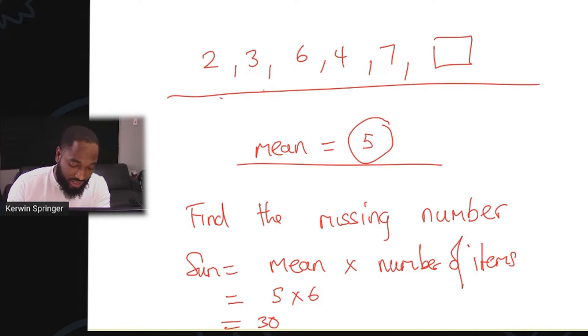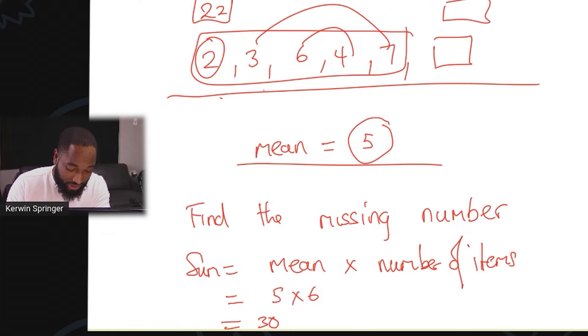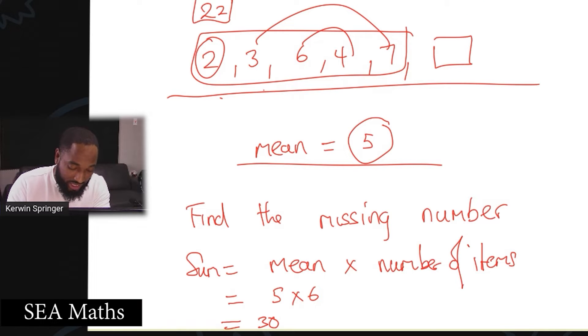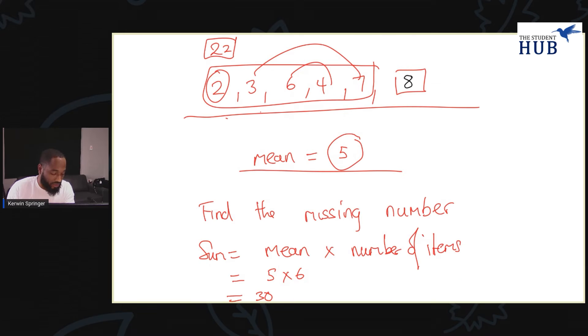So what I can do is sum this and whatever this adds up to, subtract from how much I know it should be, and I would be able to figure out the missing number. So this is the technique that you apply all the time with these questions. So 2, 3, 6... that's 10, 20, 22, and we need to reach up to 30, so we can immediately come to the conclusion that the missing number here is 8. Agreed?